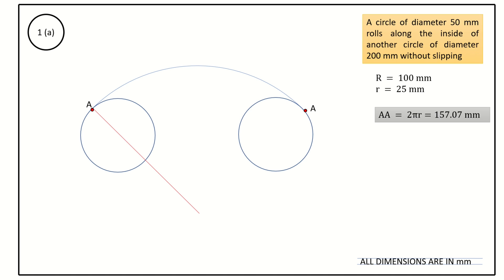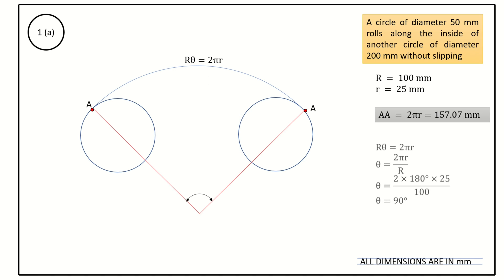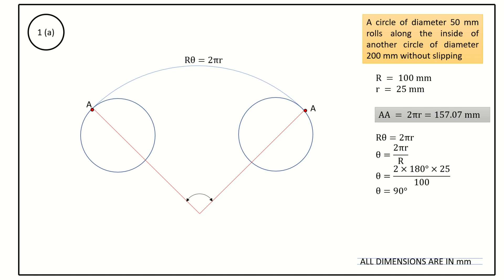Suppose we have the center point of the bigger circle. Join the center with point A, and again join the center with the other point A. The angle included can be calculated by the formula: R·θ = 2πr. Therefore, θ = 2πr / R = 2 × 180° × 25 / 100. Therefore, θ equals 90 degrees.